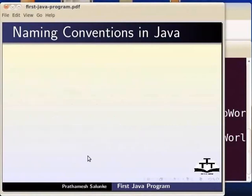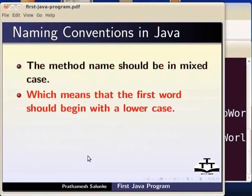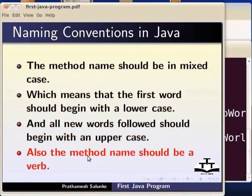For a method name, use camelCase — the first word starts lowercase and subsequent words are capitalized. For example: method names follow camelCase convention.